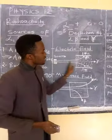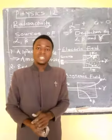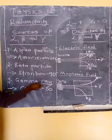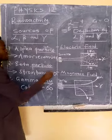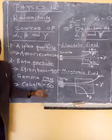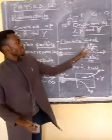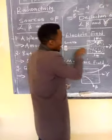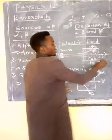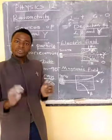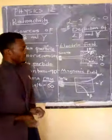Gamma continues moving straight and has no mass. Alpha and beta are referred to as particles because they have mass, but for gamma we use the term 'ray.' Anything that has mass is supposed to be affected by an electric field, but gamma is not affected. This shows that gamma is neutral and has zero mass — it cannot be deflected in an electric field.